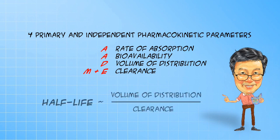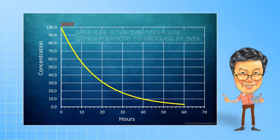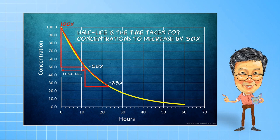Half-life is actually not one of those primary parameters. It is a derived parameter, dependent on volume of distribution divided by clearance. Half-life is defined as the time taken for concentrations to fall by half, or 50%.